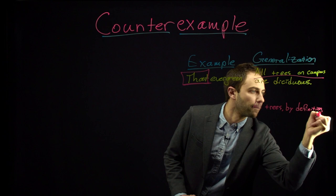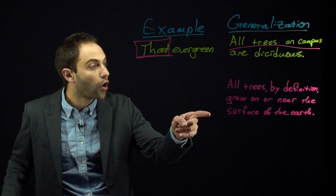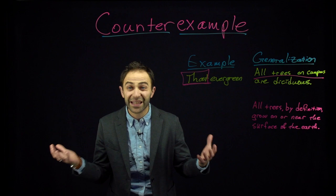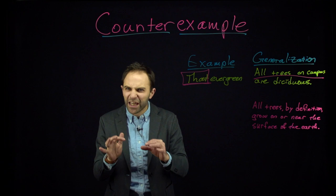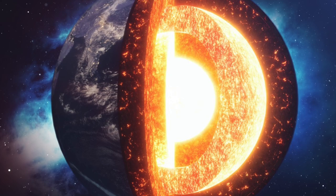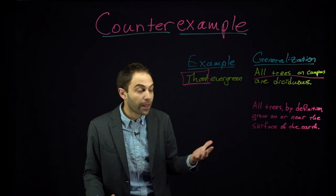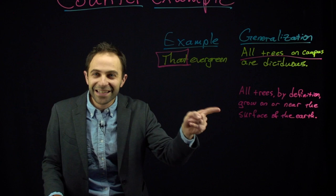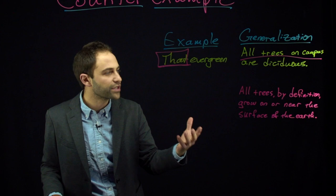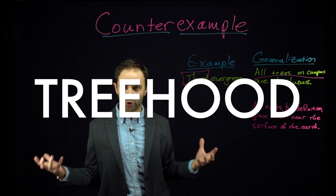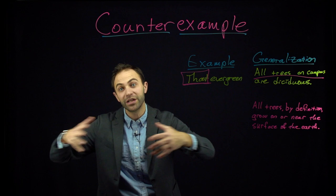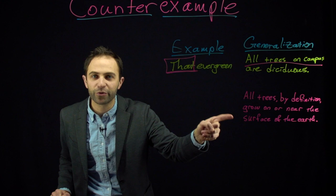Here's another generalization: all trees, by definition, grow on or near the surface of the Earth. All of the trees that exist in the universe exist on or near the surface of planet Earth. We're not going to be able to find a real example of a tree growing on another planet or deep in the Earth's core. Trees evolved here on the surface of this planet, and that's the only place they are as far as we know. But this generalization is still false, because this generalization is about the definition of a tree — a claim about treehood — whereas 'all the trees on campus are deciduous' is not a claim about treehood, just a claim about a bunch of trees. So how are we going to disprove this claim?